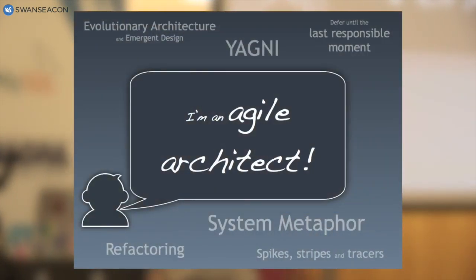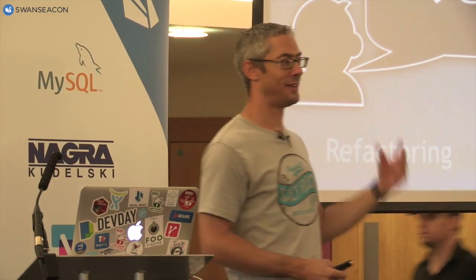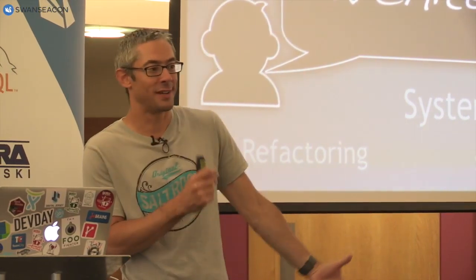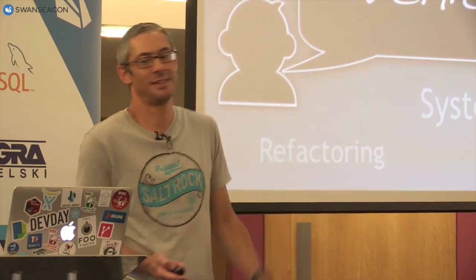So if we get all this software architecture stuff together with agile, we get 'agile architects.' Back about 10 years ago I did see people calling themselves agile architects. I had no idea what that term meant — I assumed it was something about sticky notes and whiteboards. The buzzwords were just different, just cooler: YAGNI, system metaphors from XP, last responsible moment, refactoring, evolutionary architecture. It all just sounds cooler.